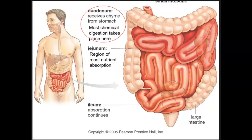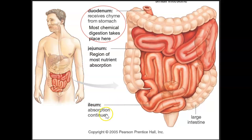One last look at the three parts of the small intestine. The duodenum receives the chyme — the mixture of food and chemicals coming from the stomach — and most chemical digestion takes place here. The jejunum is the second part of the small intestine, where most absorption of nutrients into the bloodstream and lymph capillaries takes place. Finally, the ileum continues absorption before everything left is dumped into the large intestine.